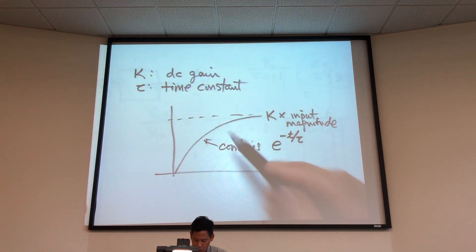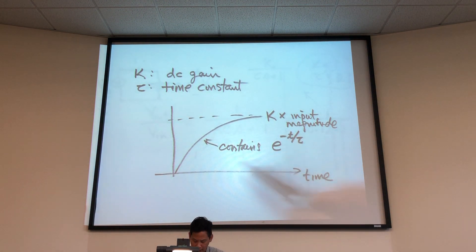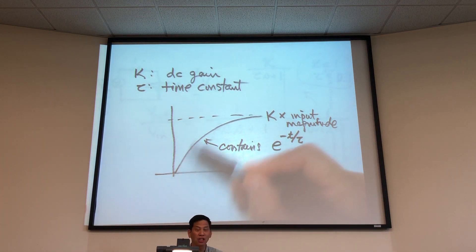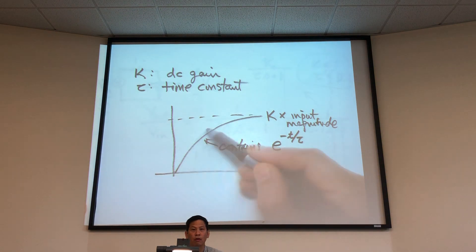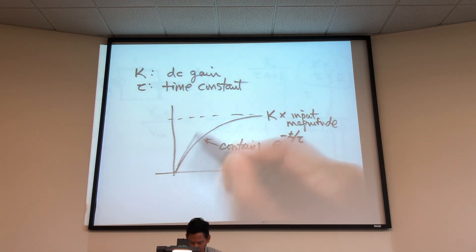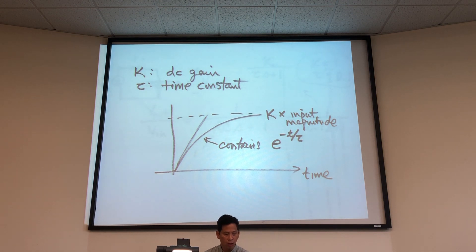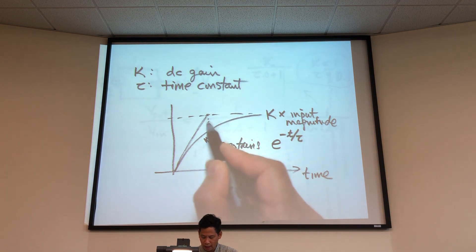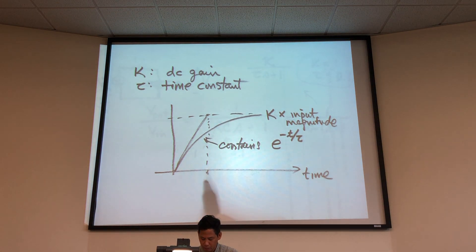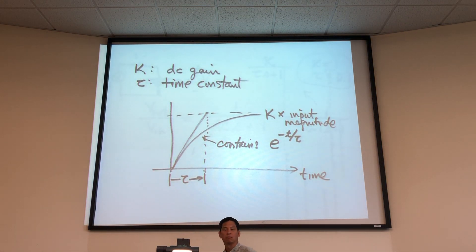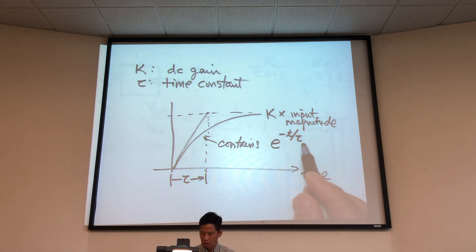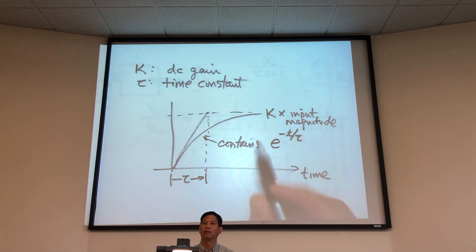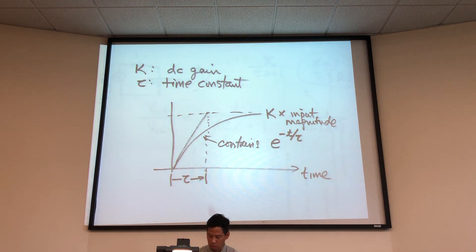One way to describe the time constant is to draw a tangent line to the curve right at the start. Where this tangent line hits the final value, the time it takes is the time constant τ. So if you have a small time constant, the response is more quick. If you have a large time constant, the response is more gradual.